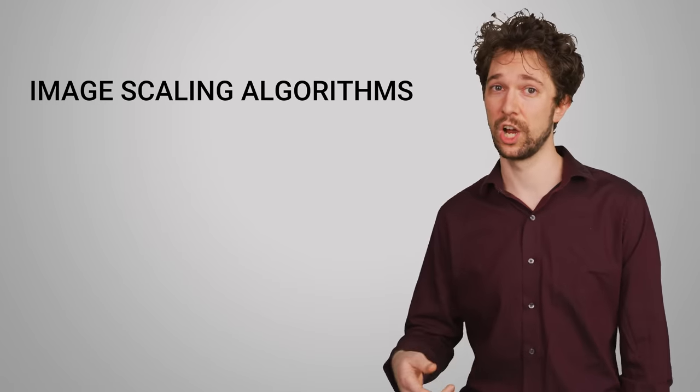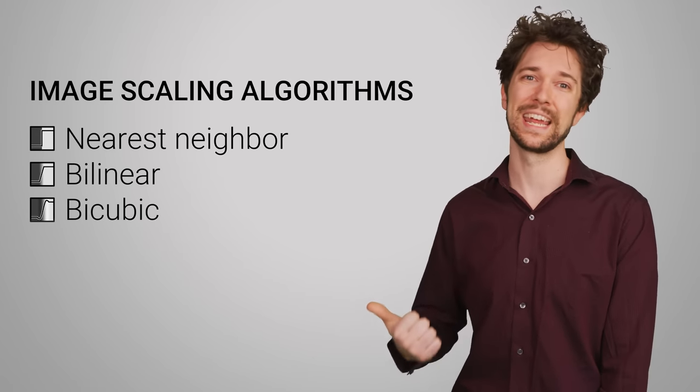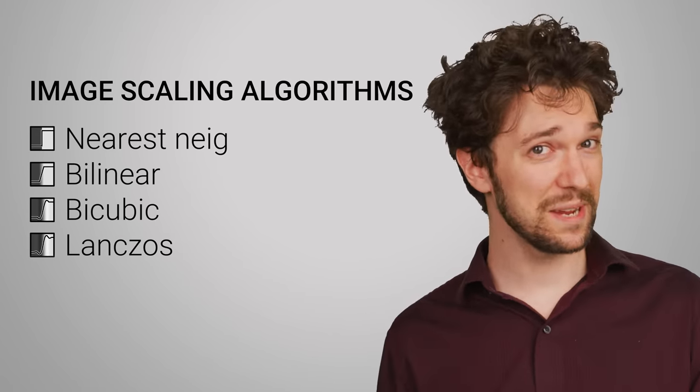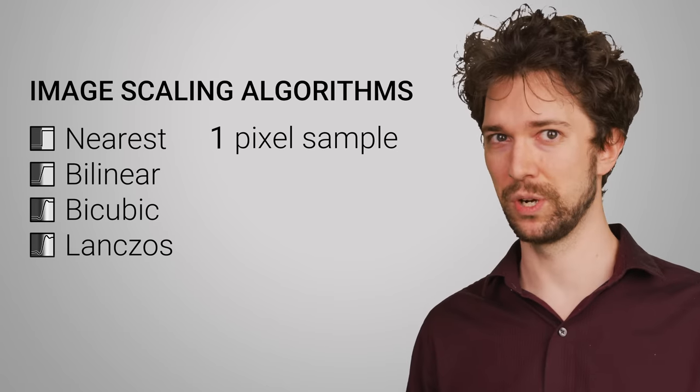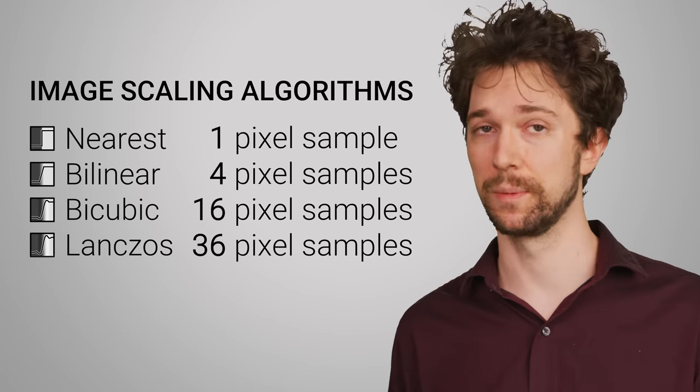The most common ones are Nearest Neighbor, Bilinear, Bicubic, and Lanchos. With Nearest Neighbor being the simplest and fastest to process, and Lanchos being the slowest and most complex.